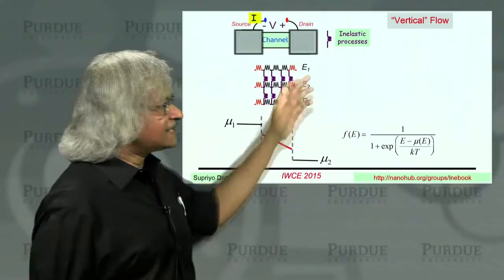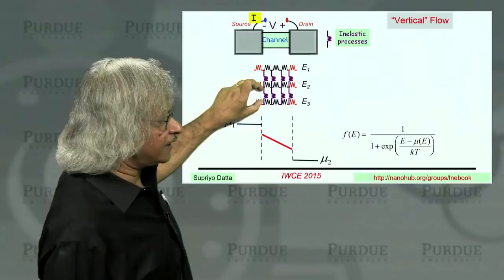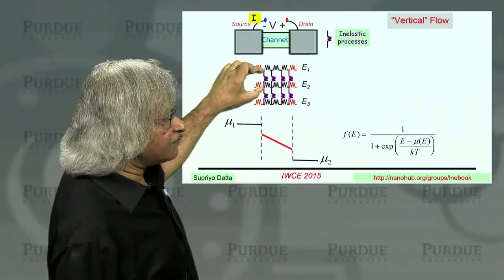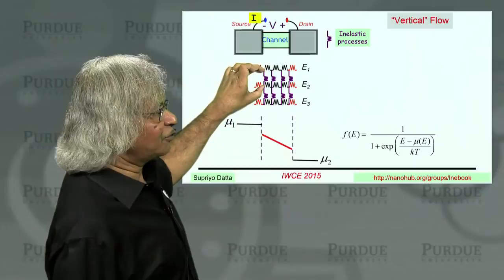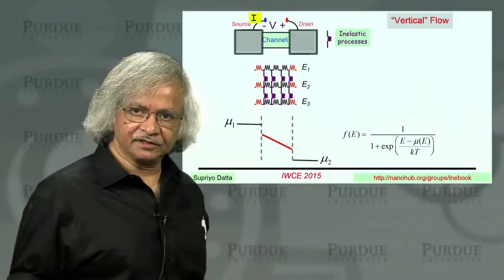Now, what inelastic processes does is, effectively it gives you resistors that connect different energy channels. Now, if all these nodes have the same mu, then, of course, adding the resistance makes no difference because that won't cause any vertical flow. But if the mu's are different, then it could cause major differences.